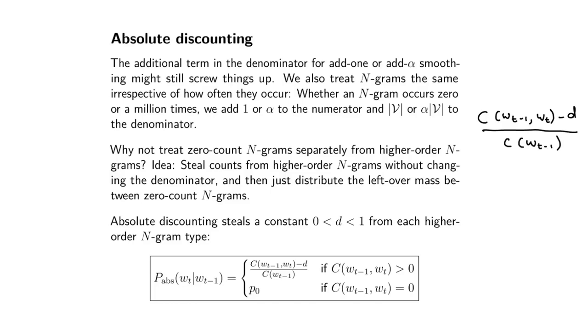This is a bigram example. This will be the estimate for the bigram probability. For anything that occurs more than once, steal a small value, a constant 0 < d < 1 between zero and one.